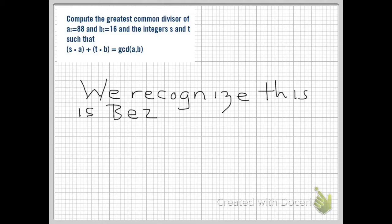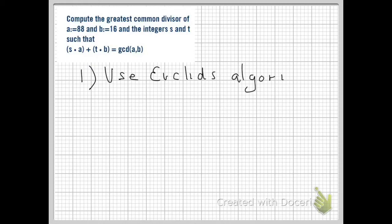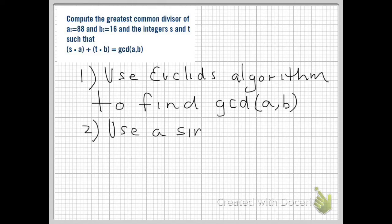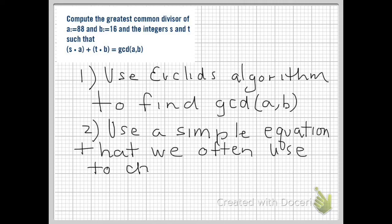We recognize that this is Bézout's identity and we're going to use the following approach. First, we're going to use Euclid's algorithm to find the GCD of 88 and 16, and then we're going to use a simple equation that we often use to check our work when we do long division.